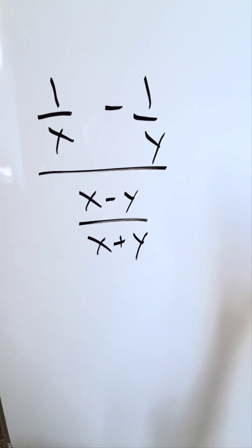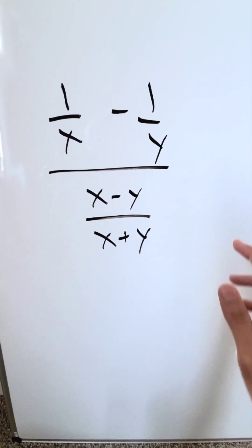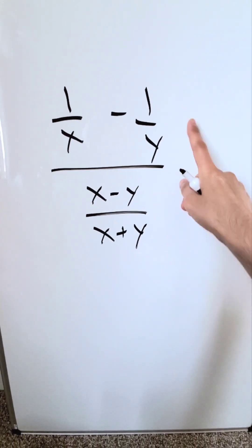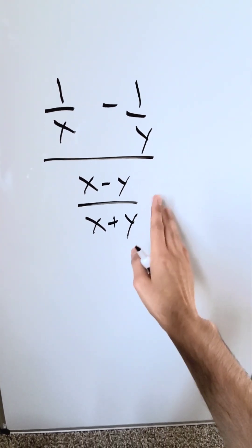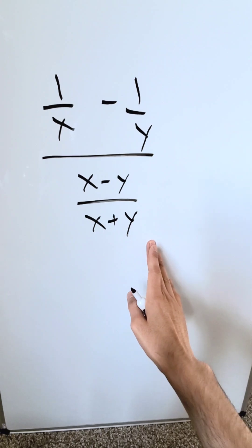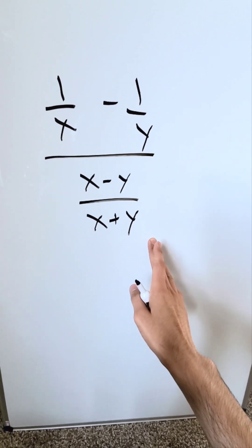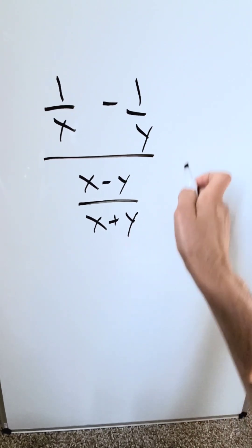We will solve this basic algebra question. The numerator is 1/x minus 1/y, and the denominator is x minus y over x plus y.